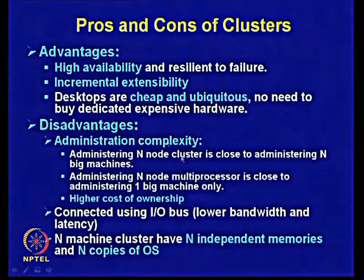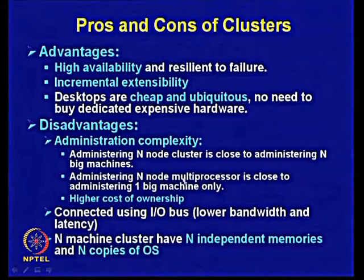The reason for that is each machine is autonomous with hardware, operating system, application software, and so on. As a consequence, each of these nodes has to be administered independently and separately. Administering an n-node multiprocessor, by contrast, is close to administering one big machine.